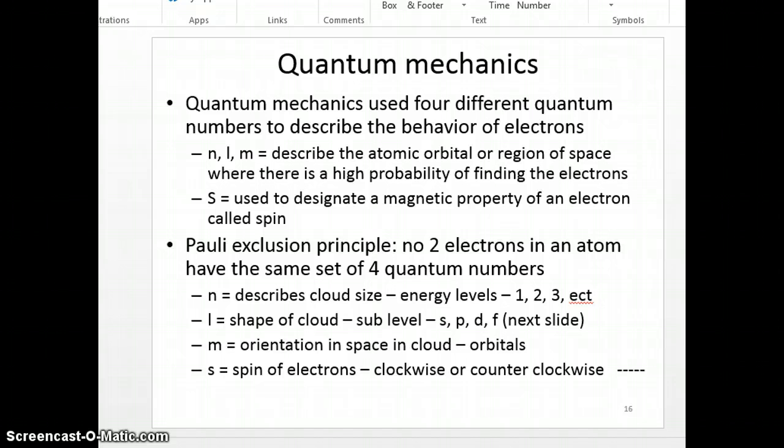Let's break each of these down. N describes the cloud size. In other words, it's energy level. One, two, three, four, five, six, or seven. How far away is it from the nucleus? And as I talked the other day, those energy levels correspond to those rows on the periodic table.